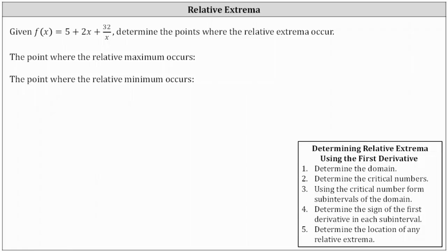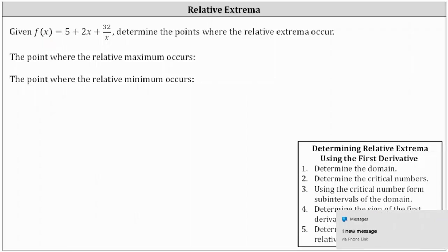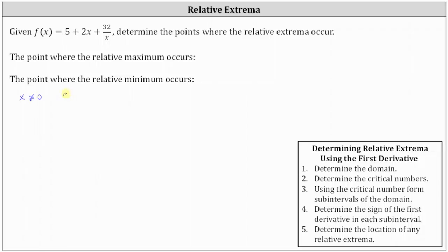Let's first determine the domain of the given function. The only restriction is division by zero when x equals zero. So the domain, expressed using interval notation, is the open interval from negative infinity to zero, union the open interval from zero to infinity.